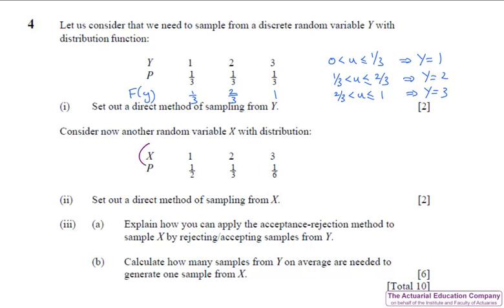We want a value from x which in the chapter 14 notation is f of x but we're going to use a value from y which is denoted in the notes by h of x and to do that we first of all have to calculate the scaling constant which is the maximum of the ratio of f of x over h of x. Notice we're working with the PDFs so in this case we'll be doing a half divided by a third, a third divided by a third and a sixth divided by a third and then we'll choose the biggest of those three ratios.